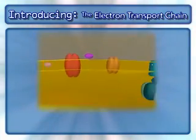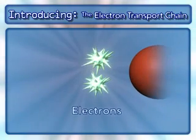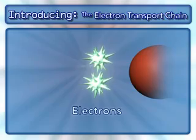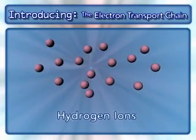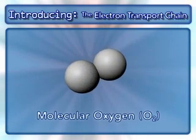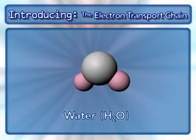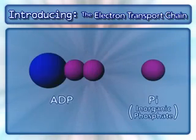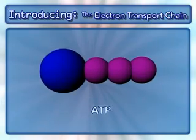Other key components in this process are NADH and the electrons from it, hydrogen ions, molecular oxygen, water, and ADP and inorganic phosphate, which combine to form ATP.